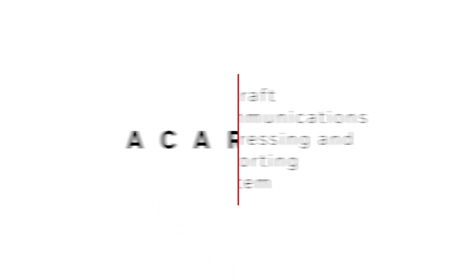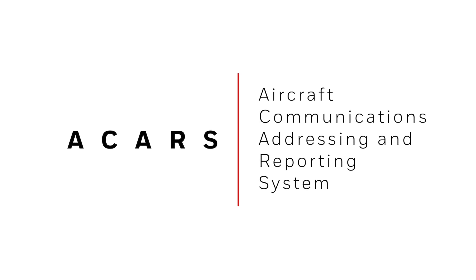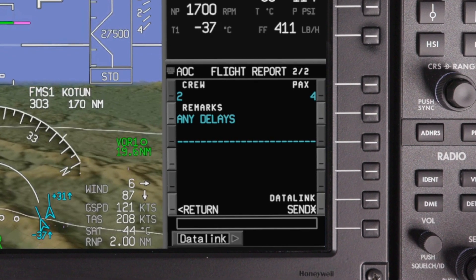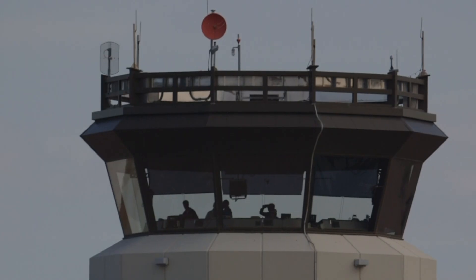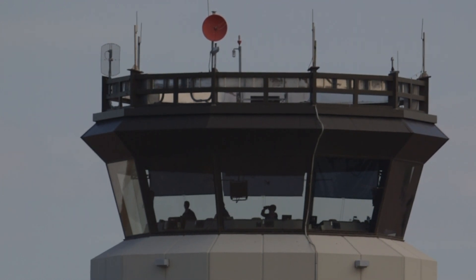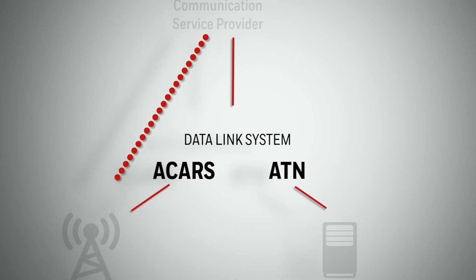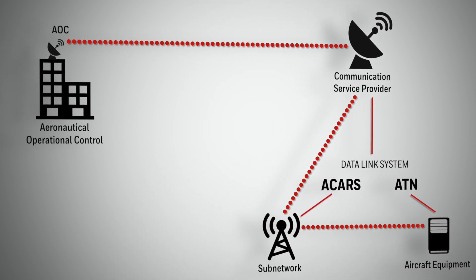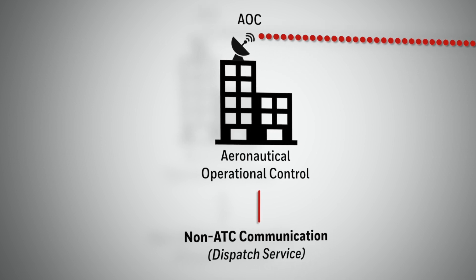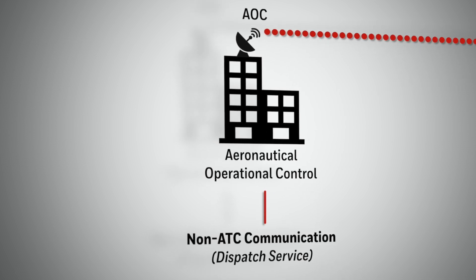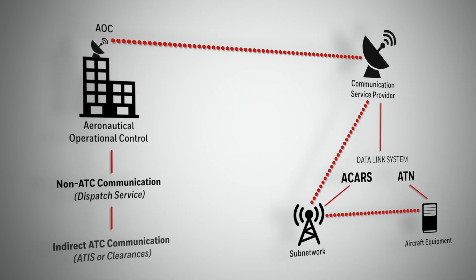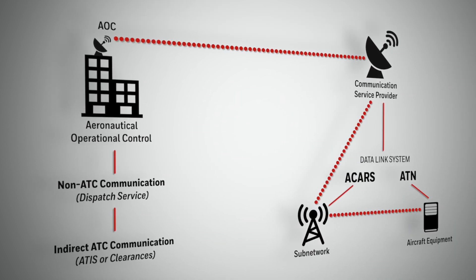An example of a Datalink network is ACARS, which stands for Aircraft Communications Addressing and Reporting System. Many pilots are familiar with ACARS as it has been in use for years for communicating with aircraft operators and certain air traffic services. ACARS is normally used to communicate with Aeronautical Operational Control, or AOC. AOC is the term used for a ground-based station other than air traffic control, such as a dispatch service, but can also include certain ATS functions such as ATIS and clearances.